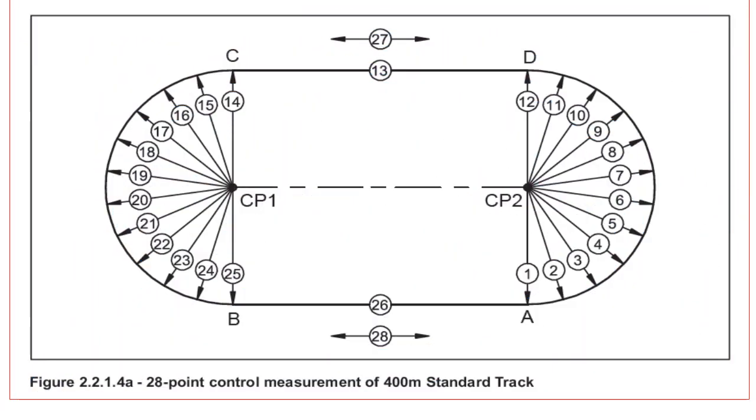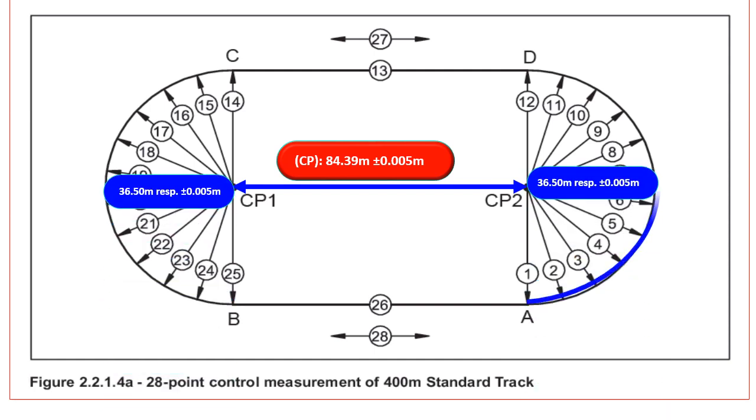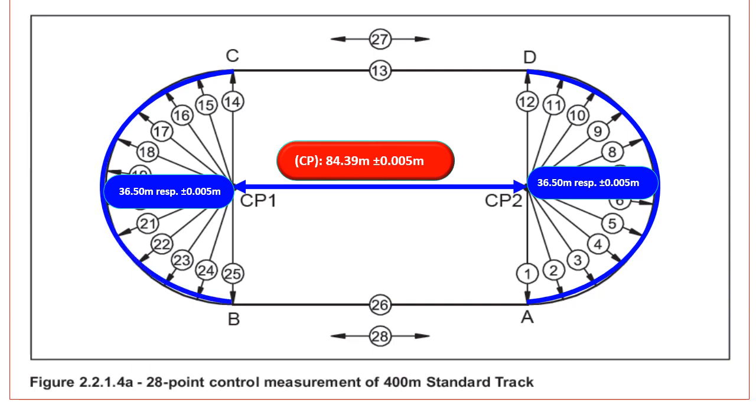Don't think that we have completed the chalk marking. Still one most important step to go. The 28 point control measurement should be carried out and the readings recorded. This is prerequisite. Distance from the center of the semicircles 84.39 meters plus or minus 0.05 meters. Measurement 1 to 12 and 14 to 25, 36.50 meters respectively, plus or minus 0.005 meters. Measurement between these points 10.42 meters approximately.